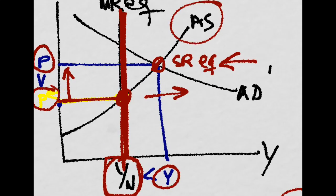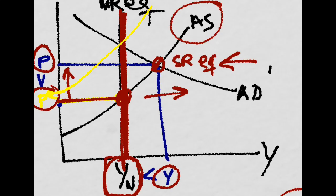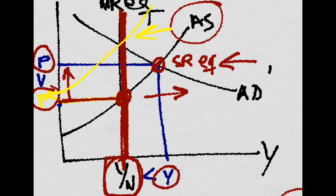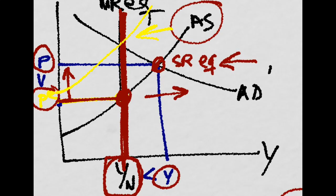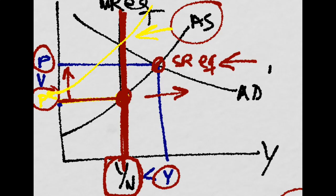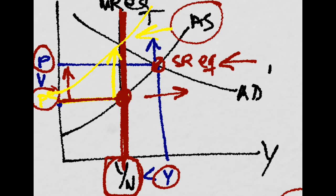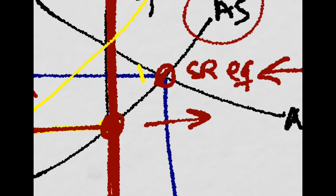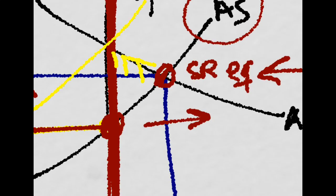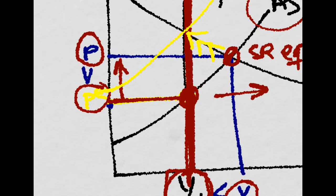And that is just a shift in the AS to the left. Because there are higher costs, and that increases both the expected price level and the current price level. You can see this as a movement along this line. Until prices equal the expected level of prices again, and we are at the natural level of output again.